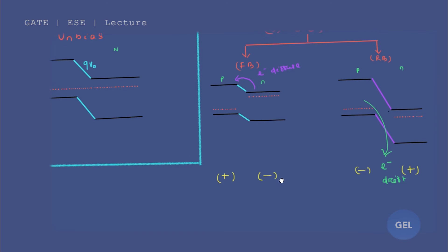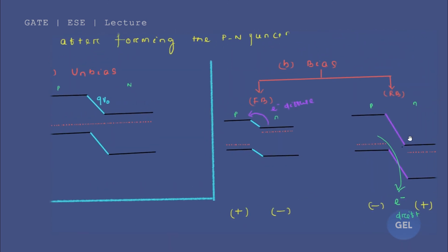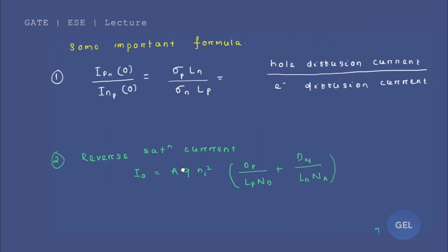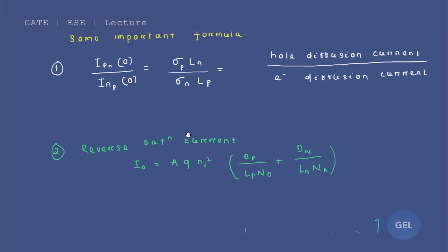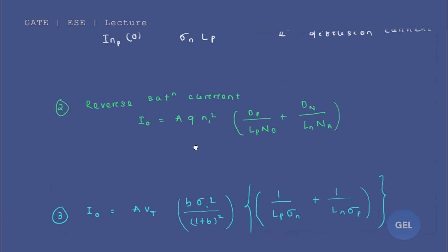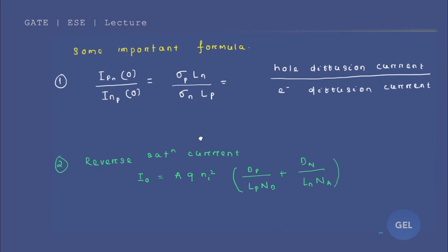So that is how you represent the Fermi energy level for forward bias and reverse bias cases. Practice drawing it yourself. With this we are done with Fermi energy level representation, which is the last lecture video of the PN Junction module. In the next video, we will cover a couple of theories important for the GATE exam. Before finishing, please go through these three formulas — they are simple but very important for the GATE exam.